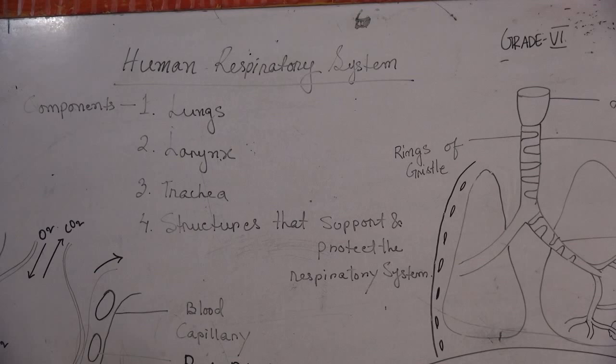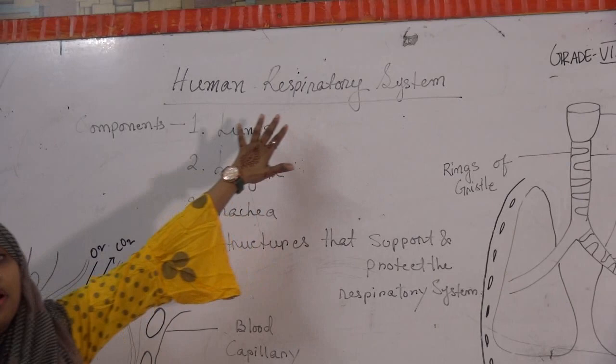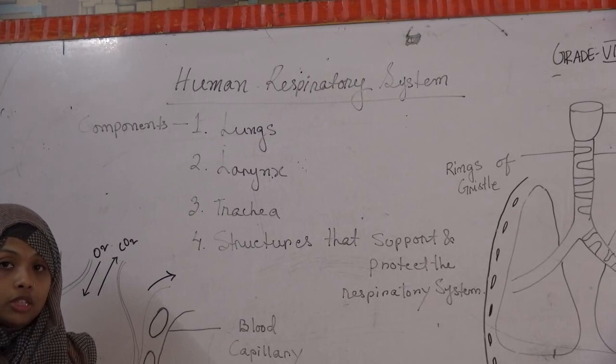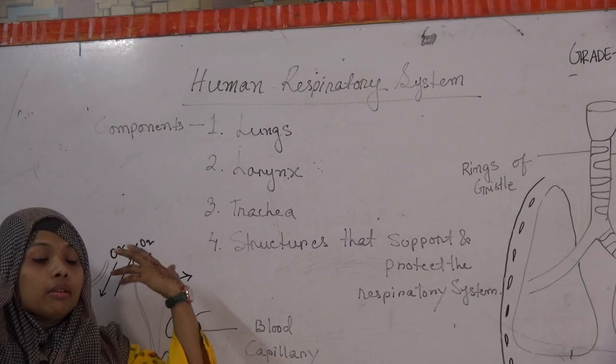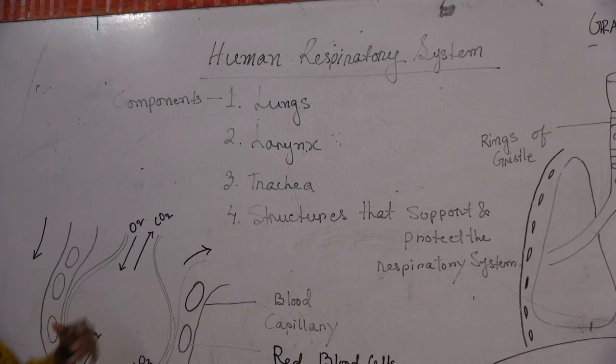Before we move on with the respiratory system, let's talk about what breathing is and what respiration is. Breathing is a mechanical process where nothing is being converted — you take in air and you give out air. Respiration, on the other hand, is a process where glucose is broken down in the presence or absence of oxygen to give you energy; as a byproduct, carbon dioxide is also produced.